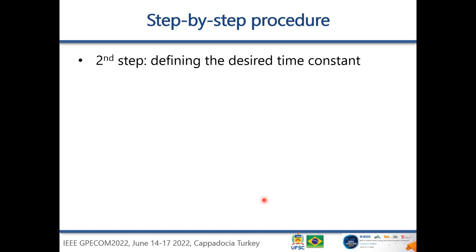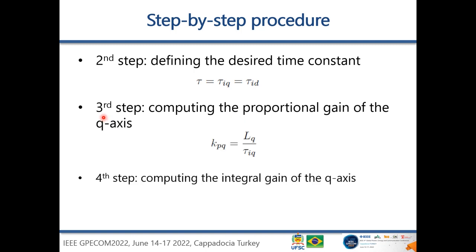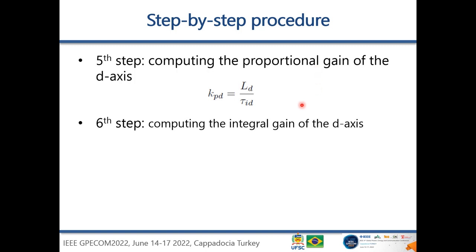The second step is defining the desired closed-loop time constant. The third step is computing the proportional gain Kp for the Q axis using the corresponding equation. The fourth step is computing the integral gain Ki for the Q axis. After these steps, the Q-axis current controller is fully designed. Steps five and six then compute the proportional and integral gains for the D axis using their respective equations.